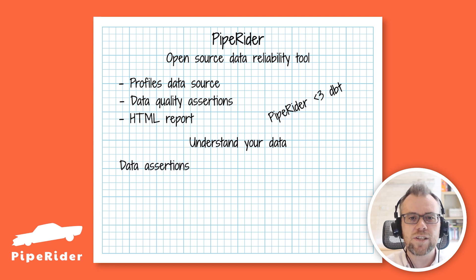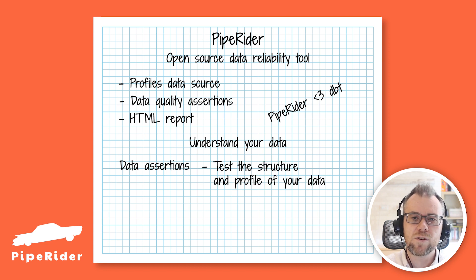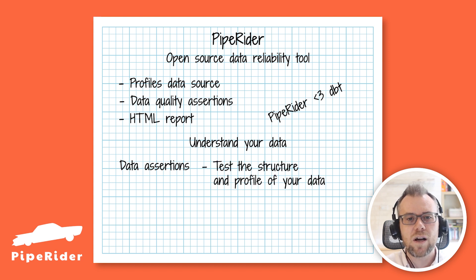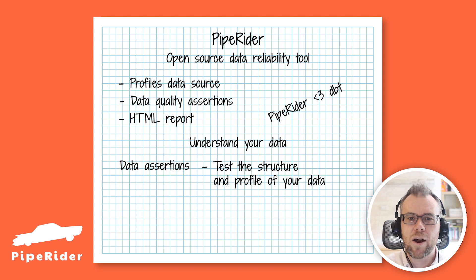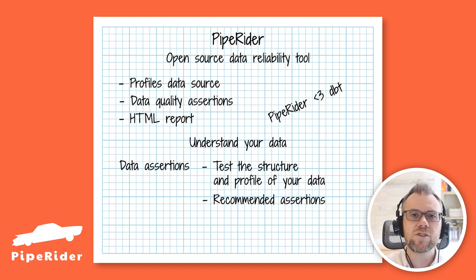Data assertions allow you to test things like the number of expected columns and rows in a table, the data types of columns, that values are within a specific range, and that all values are present with no missing data. PipeRider comes with out-of-the-box assertions and also has a recommended assertions feature to generate sensible defaults based on the current state of the data.